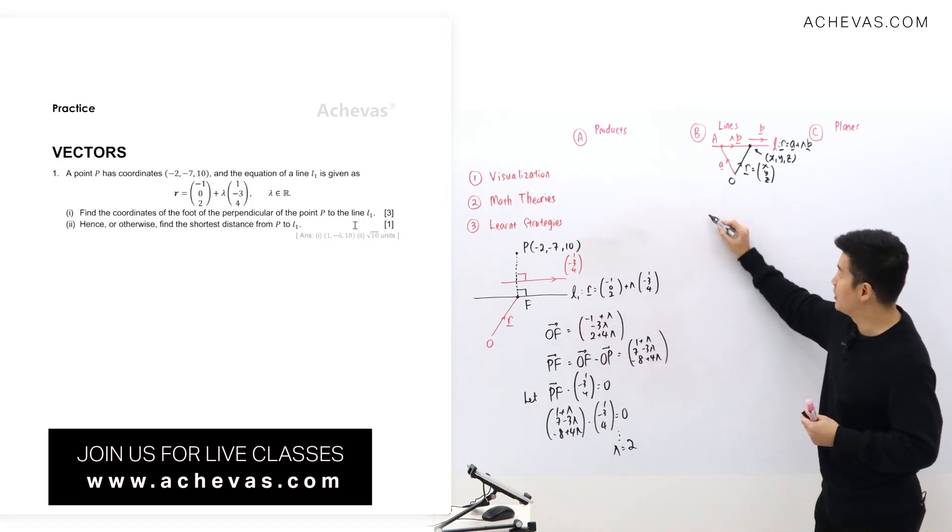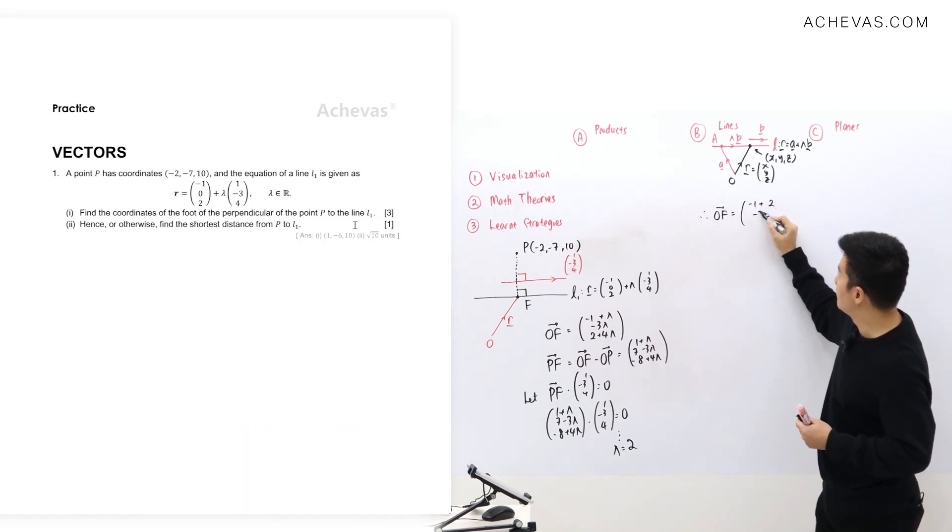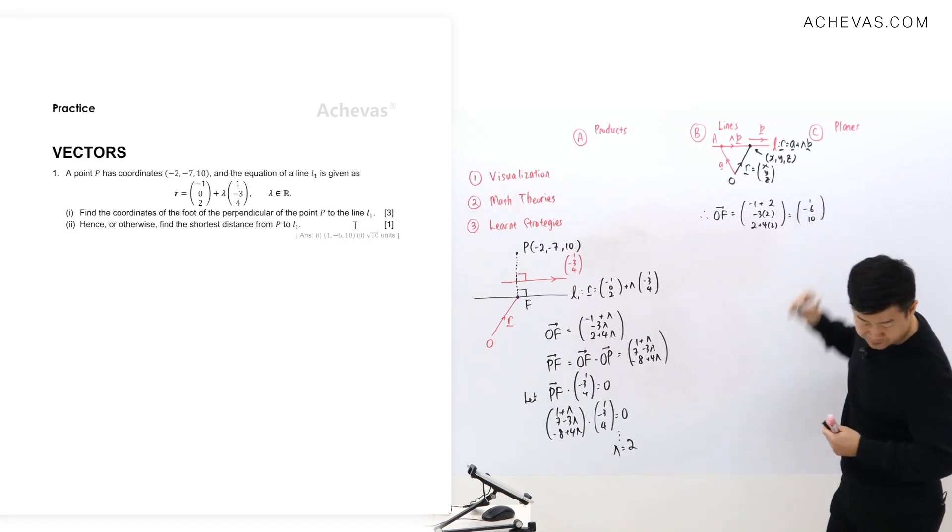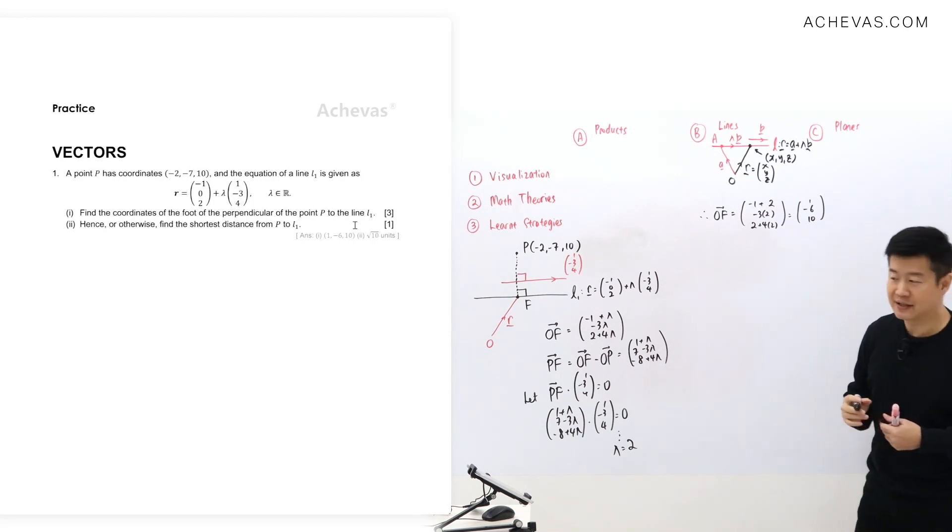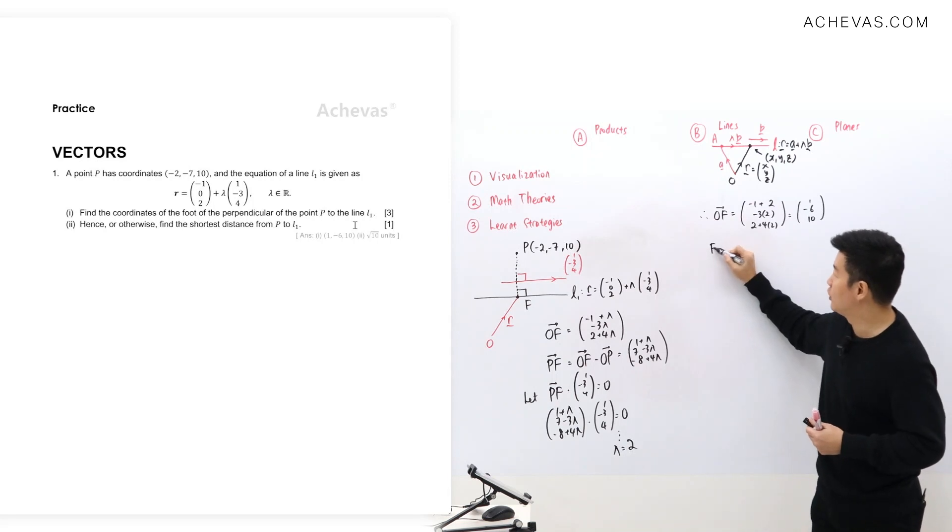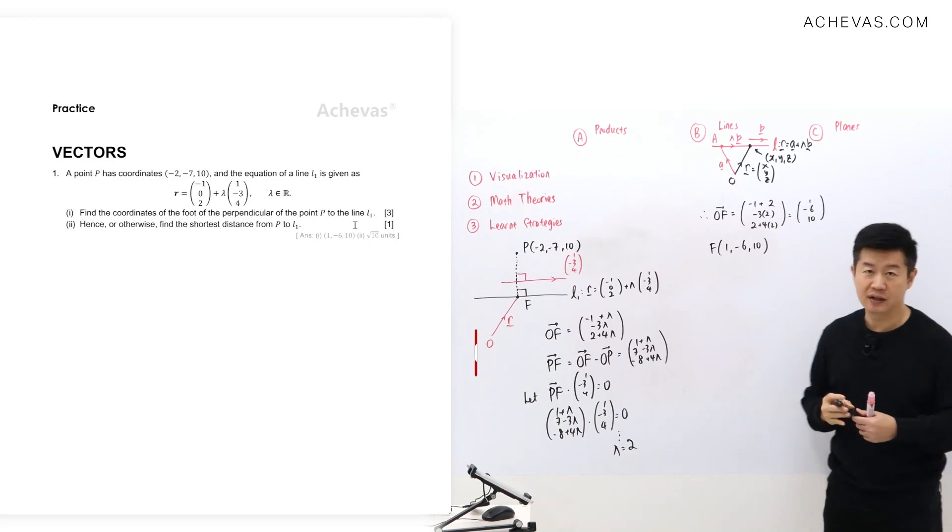So therefore, from here, we know that the position vector of F is going to be minus 1 plus 2, minus 3 times 2, 2 plus 4 times of 2. This is going to be equal to 1, negative 6, and 10. OF is this, and since the question asked me about the coordinates of point F, so the coordinates will be 1, negative 6, 10.